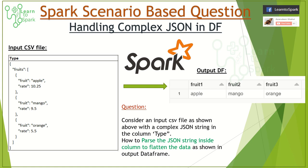The scenario involves an input CSV file which has a column called 'type', and inside that column the content is related to a JSON string. The requirement is to parse this JSON string and flatten the data as shown in the output DataFrame.